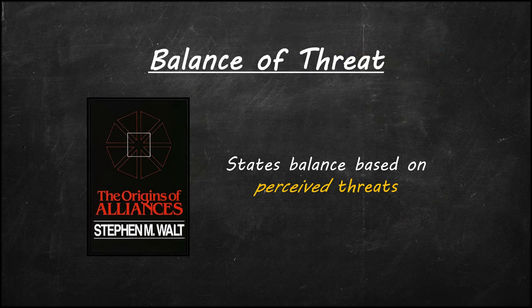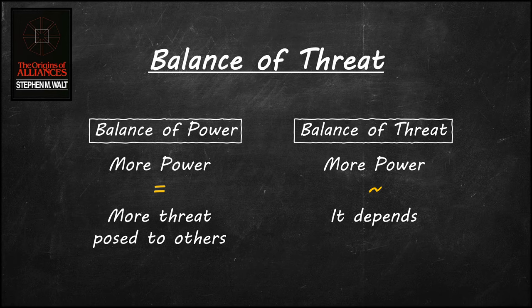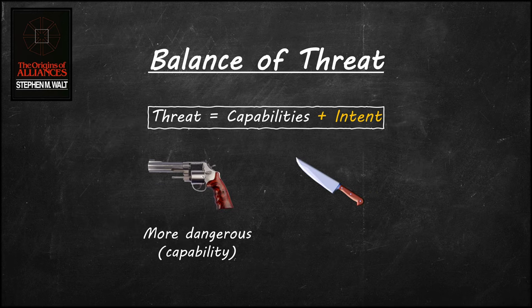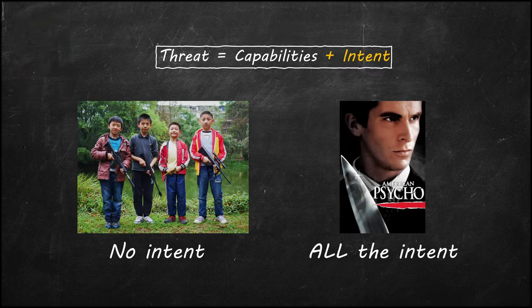The balance of threat theory is a modification of balance of power theory. It says states balance against other states based on how threatening they are, and not necessarily based on how powerful they are. This is an important conceptual change in neorealism. Structural realism assumed that greater capabilities meant greater threats to other states, but the balance of threat theory questions this linear assumption. In general, a threat is a combination of capabilities and intent. Consider this analogy: a gun has more destructive capability than a knife, but a person with a gun without the intent to use it is usually less threatening than a person with a knife with the intent to use it.